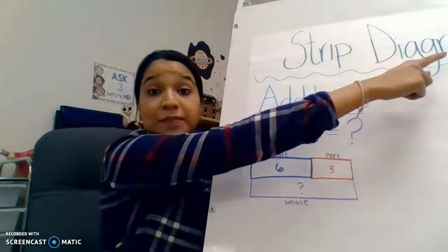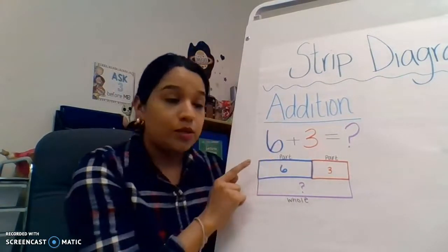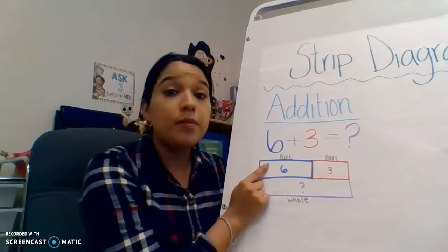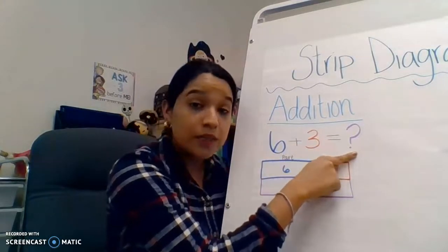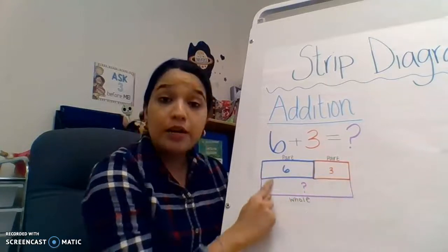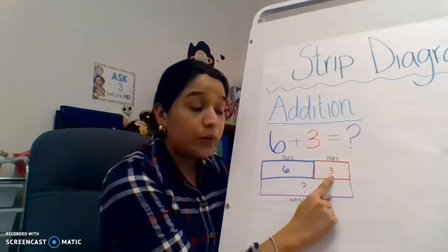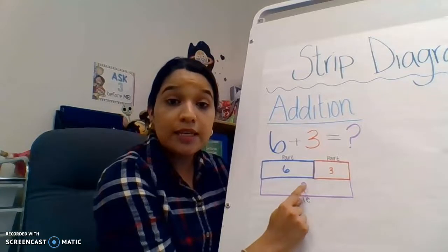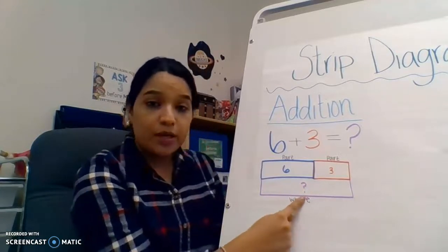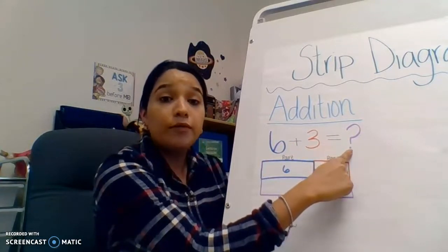Let's go ahead and look at our anchor chart from yesterday. This is our strip diagram that we did for an addition word problem. Yesterday we had to solve how many birds were on the tree. We have six plus three equals question mark because we didn't know how many birds were on the tree. We drew our part — six — and another part — three — and wanted to figure out our whole. We added them together to solve for our sum.